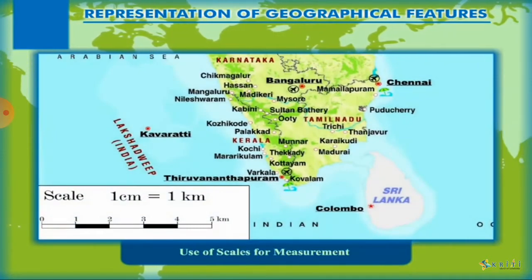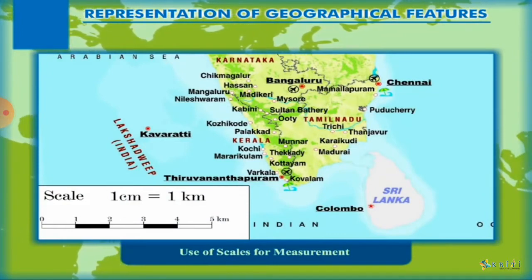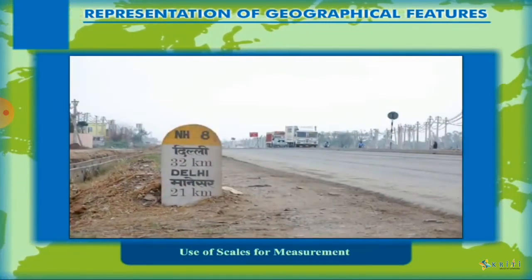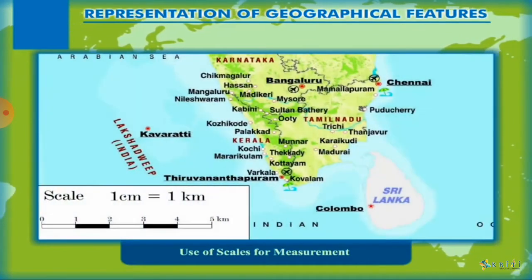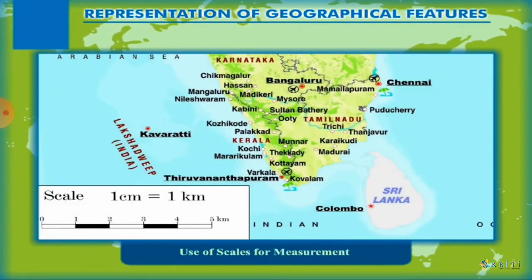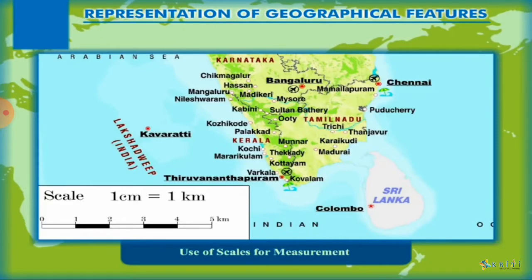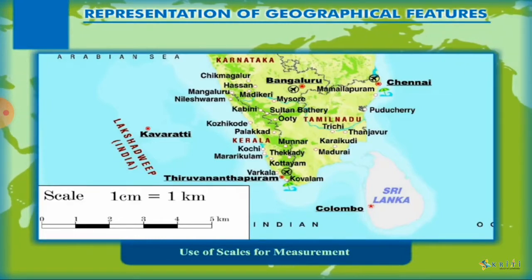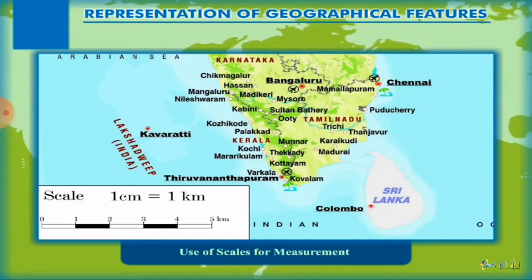The grid lines include eastings and northings. Scale is defined as the ratio of the distance on the map and the corresponding distance on the ground. The distance on the ground is usually measured in large units such as kilometers or miles, while the distance on the map is measured in centimeters or inches. The scale shows how many centimeters or inches on the map represent how many kilometers or miles on the actual ground.